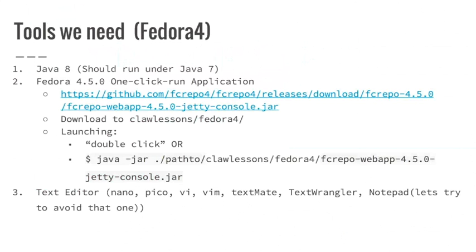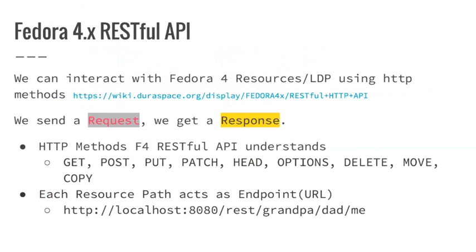We also need some type of text editor. It can be something terminal-based like nano, pico, or vim, or something more fancy like TextMate or TextWrangler. For Windows users, Notepad is also an option, but try to avoid it if you can. So let's talk about the Fedora 4 RESTful API. Basically, it's a way to interact with our Fedora 4 resources using LDP through HTTP. There's a lot of documentation in the Duraspace wiki page. I'll go through the basics, but if you want to go deeper and see all the options, I recommend reading that Duraspace wiki page - it's pretty comprehensive, well done, has a lot of information, and it's also very confusing. That's the idea of having this lesson.